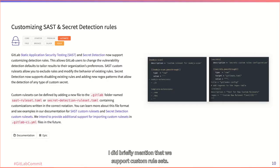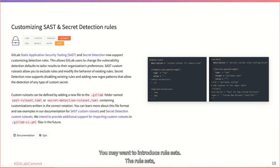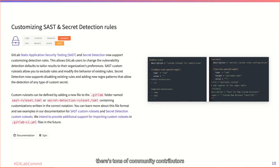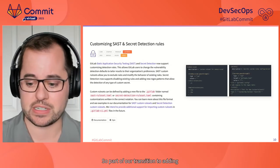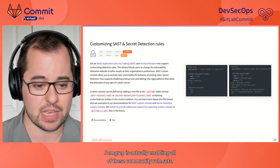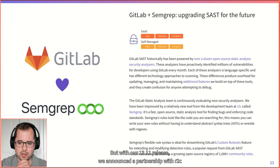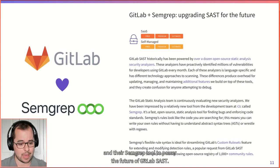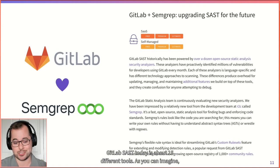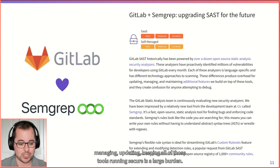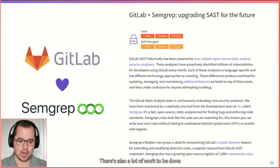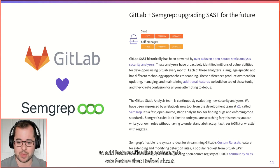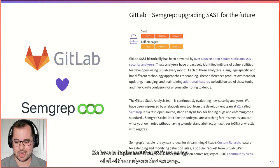We do support custom rule sets when you want to fine-tune your rules and add custom ones. The reason I bring this up is that the Semgrep community is actually very rich — there are tons of community contributors building and writing rules for the Semgrep engine. Part of our transition to adding Semgrep is enabling all of those community rule sets. With our 13.11 release, we announced a partnership with R2C and their Semgrep tool to power the future of GitLab SAST.